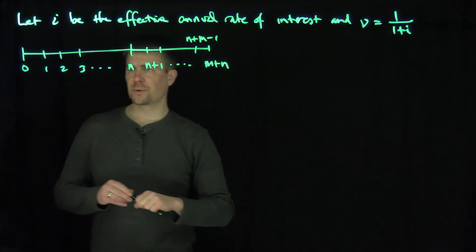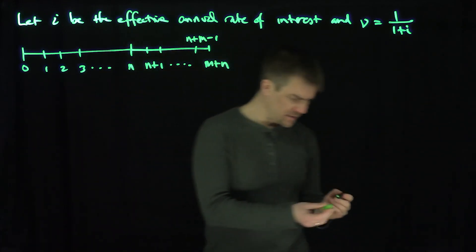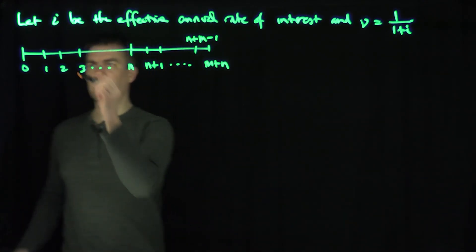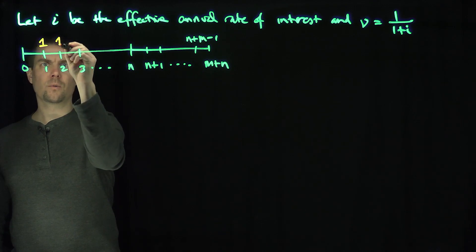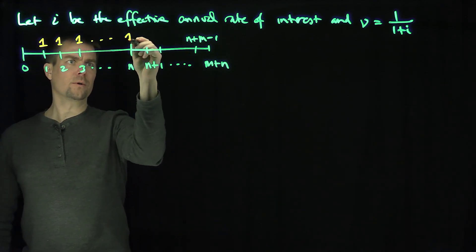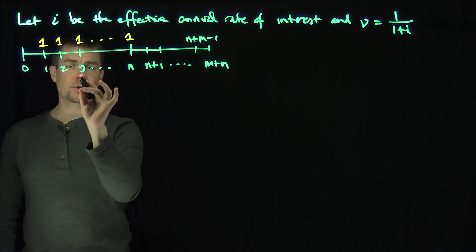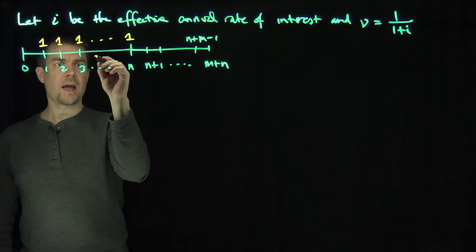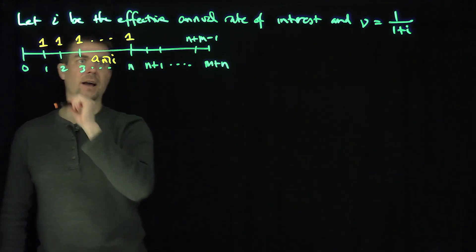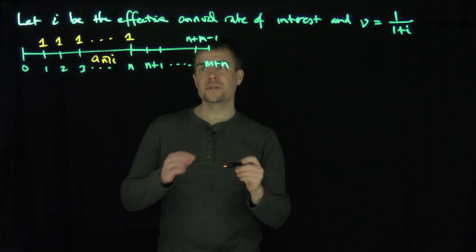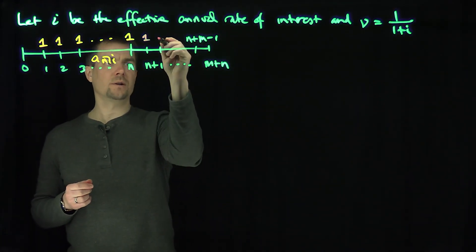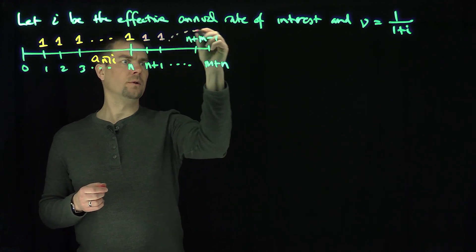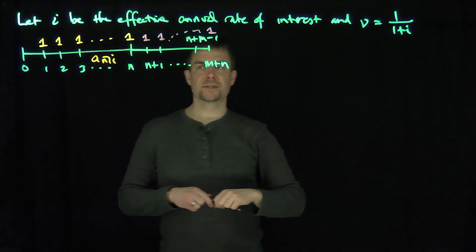The first thing we're going to do is this: what if we get paid a dollar? We'll do the immediate case, so we'll do one at each time point all the way to time n. If I just had that payment stream, that would be exactly a_n,i. But now what happens if we go further? We keep getting dollars past time n plus 1, n plus 2, all the way up to time n plus m.